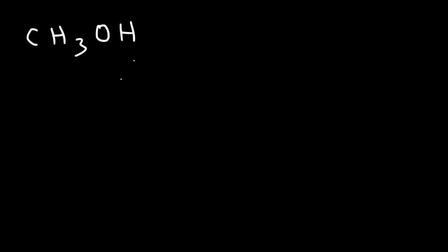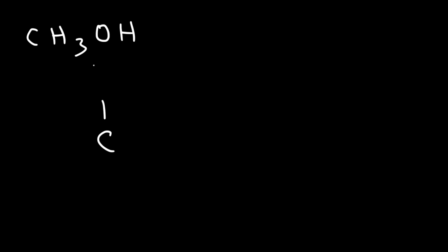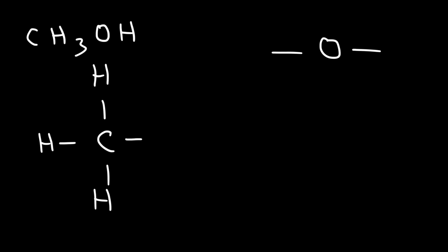What about methanol, CH₃OH, a type of alcohol? Viewing the molecule from left to right, we have a carbon with three hydrogens attached to it — each hydrogen can only form one bond. The carbon is then attached to an oxygen. Oxygen likes to form two bonds and has two lone pairs. And then we attach a hydrogen to the oxygen. So this is the Lewis structure for methanol.